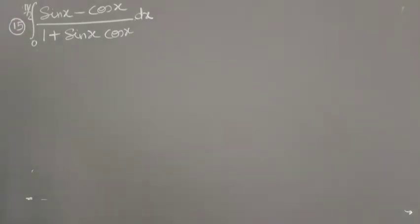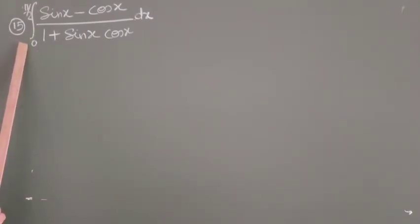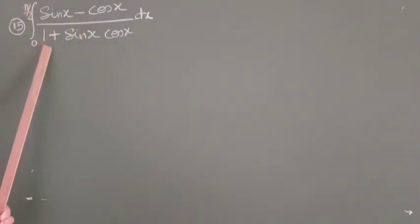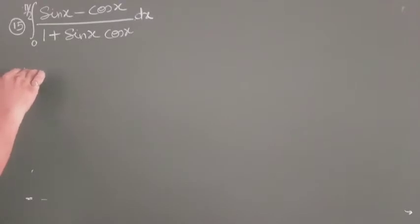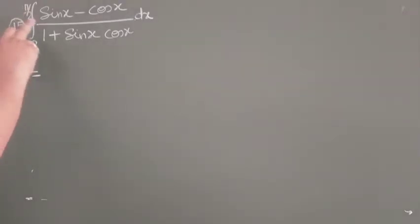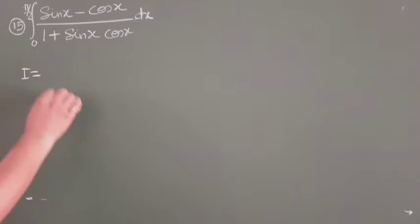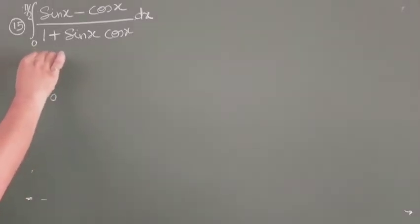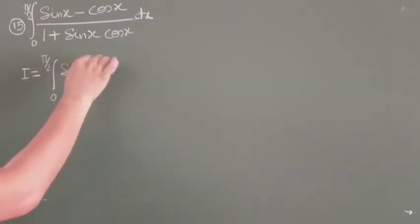Hello students, let us solve more questions of integration by using properties. This is question number 15 of exercise 7.11: the integral from 0 to π/2 of (sin x - cos x)/(1 + sin x cos x) dx. We are going to use the property: ∫₀ᵃ f(x)dx = ∫₀ᵃ f(a - x)dx. Let us apply the property.